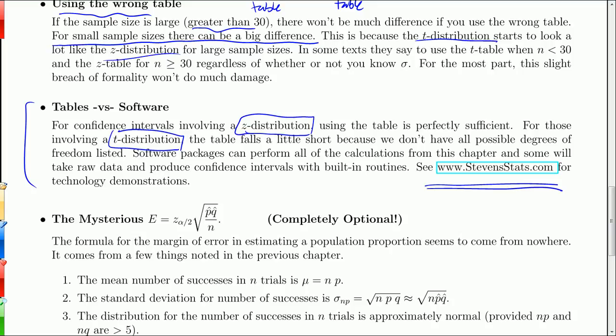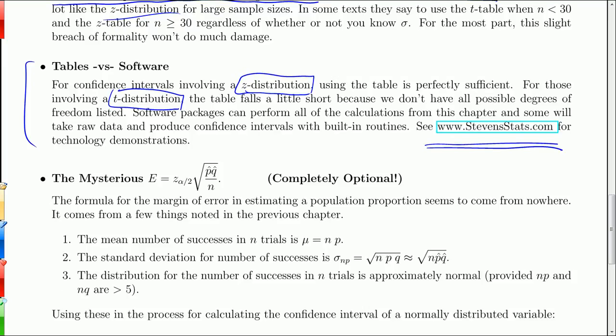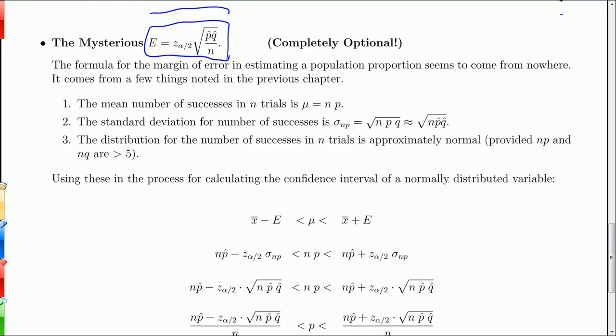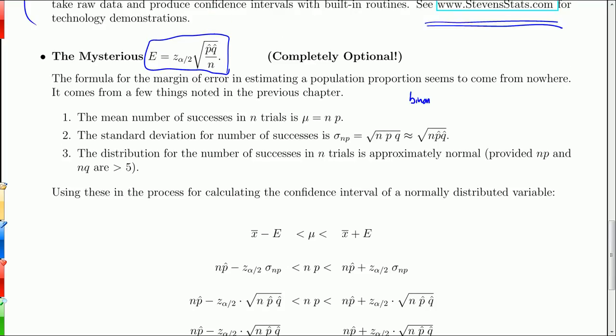Now the mysterious margin of error: I introduced it when calculating population proportions and just threw it out there without justification. Here's the outline of where it comes from. When you're working with population proportions, it's based on a binomial distribution. I use a z table, which is a normal distribution — so I'm using a normal distribution to approximate a binomial distribution, just like we did in Chapter 6.5.